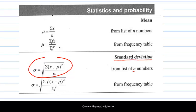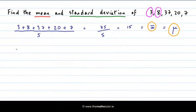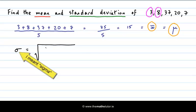So n in this case is 5 because we have 5 numbers. Let's write this formula out again. The formula says that σ, the standard deviation, is equal to the square root of, well in here we have our deviations, that's x minus μ.